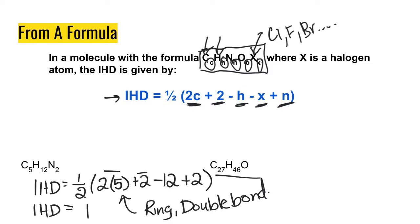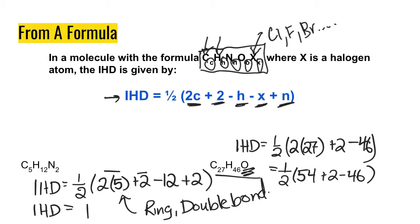Okay, so our next example here, our IHD, if we apply the same formula, ½, 2 times the number of carbons, plus 2, minus 46, the number of hydrogens. And then oxygen doesn't contribute to the IHD, so we don't need to add or take away anything else from there. So if we go through here, 2 times 27 is going to be 54, plus 2, minus 46. And so that's going to give us an IHD of 5.